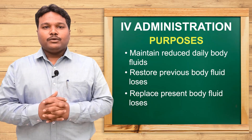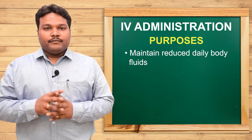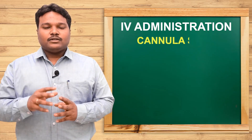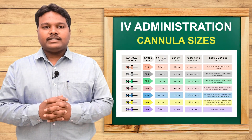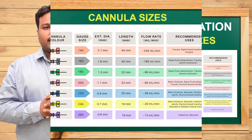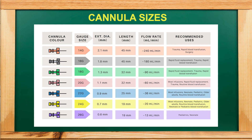We use different types of gauges to administer drugs. The 14 gauge is orange color, 16 gauge is gray color, 18 gauge is green color, 20 gauge is pink color, 22 gauge is yellow color, and 24 gauge is purple color. These are the different types of gauges used to administer drugs into the patient's body.